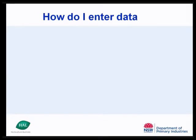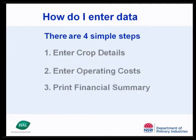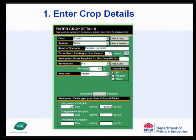How is data entered into VegTool? There are four simple steps: enter crop details, enter operating costs, print financial summary, and compare scenarios. In the enter crop details step, information about the crop, the season, period from planting to final harvest, water required to grow the crop, harvest unit and area unit is inputted.